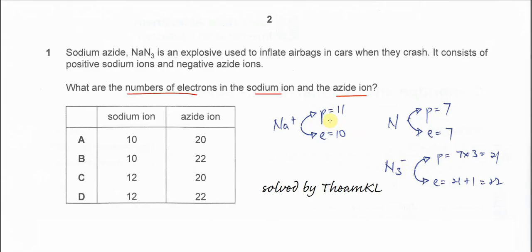So first we find the proton number. Proton number of sodium is 11. Because it's a sodium ion, it releases one electron, so the electron number therefore will be 10. So 11 minus 1 is 10.